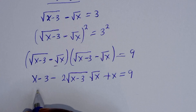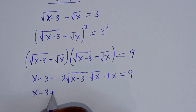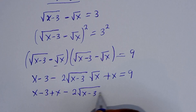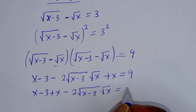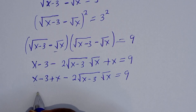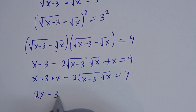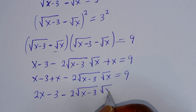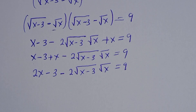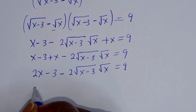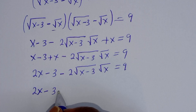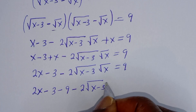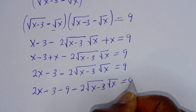This is x minus 3 plus x minus 2 square root of x minus 3 times square root of x, is equal to 9. This is x plus x minus 3 minus 2 square root of x minus 3 times square root of x, is equal to 9. And this becomes 2x minus 3 minus 2 square root of x minus 3 times square root of x, is equal to 9, then rearranging gives us equal to 0.